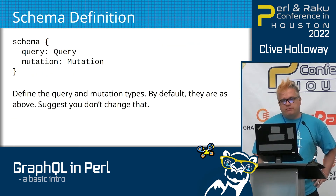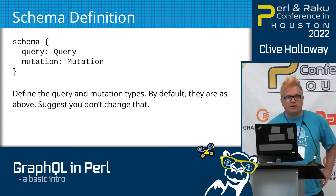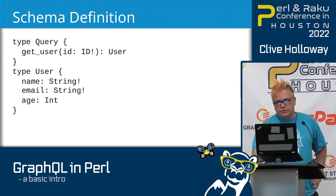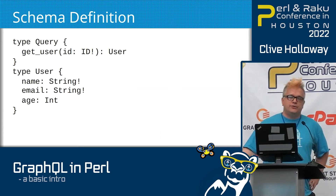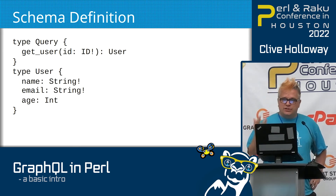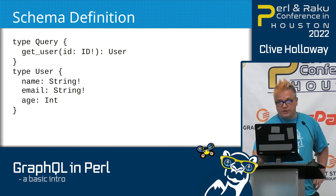At the beginning of the schema — this is kind of hidden from most people — you define what your query and mutation types are. Don't change this; I don't know why they made it an option, maybe there's a historical reason. I have seen some old examples where people use a different name. But generally you're going to be looking at query types and mutation types when writing your schema. Here's an example where I've described a query called get user — you send it a user ID, which is required, and it will return a user object. I've defined the user object as returning a name and an email, but the age is optional. And when requesting data, you could say I just want the user's name or just the email, minimizing the amount of data transferred back to the client.